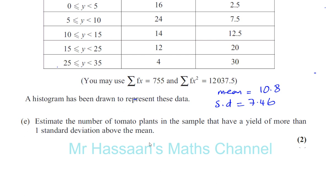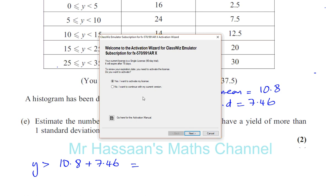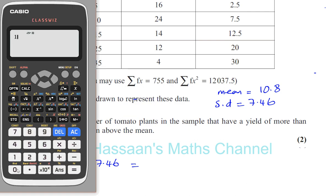We want the yield to be greater than one standard deviation above the mean. The mean is 10.8 and the standard deviation is 7.46, so 10.8 plus 7.46 gives us one standard deviation above the mean.